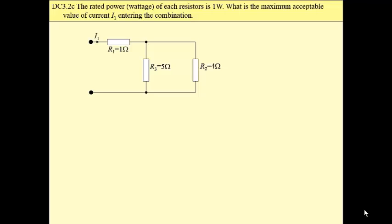Same for each of these resistors. What is the maximum acceptable value of current entering the combination?